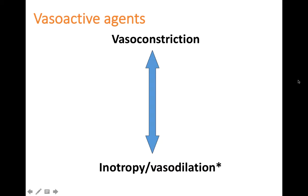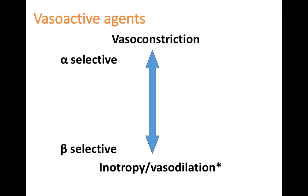Here's another way of thinking about the vasoactive agents. Looking at the spectrum on the arrow, agents with more vasoconstrictive activity are on one end, while those with more inotropy or vasodilatory activity are on the other. Agents that are more alpha-selective will vasoconstrict, whereas agents that are more beta-selective will cause inotropy, increased heart rate, and increased contractility. Those with beta-2 activity cause more vasodilation.